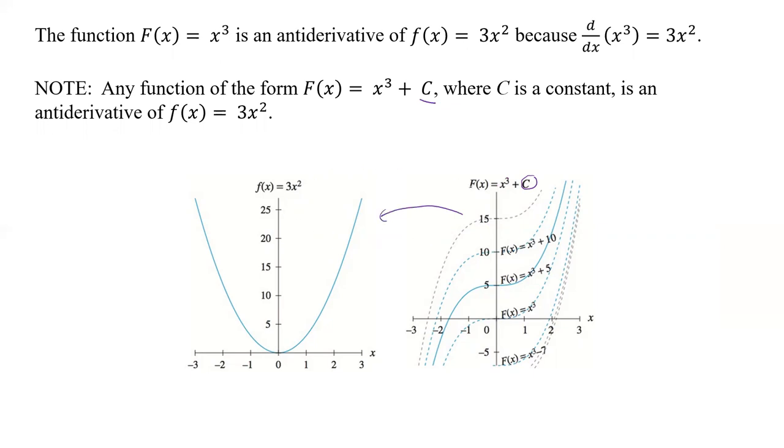So going this direction, taking the integral, we can get a lot of different functions out because it depends on what our C is. But going backwards, if we take the derivative of that, when you take the derivative of C, guess what? It goes to zero, so we just get that 3x squared. So that's kind of a difference in going one direction to the other. We have this C constant that can change.